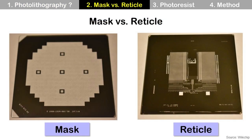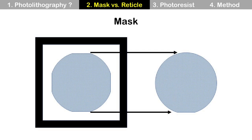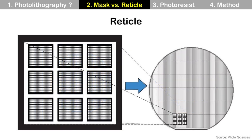A mask is a plate with a semiconductor pattern on top. Usually it is made of quartz, but sometimes also made of soda lime glass. A quartz mask can make smaller, more complex patterns than soda lime glass, but it is more expensive. The semiconductor pattern on the quartz plate is made by a chrome layer. A mask transfers the semiconductor pattern onto the whole wafer at one time, but a reticle makes a pattern on only a small part of the wafer, so it must repeat many times.